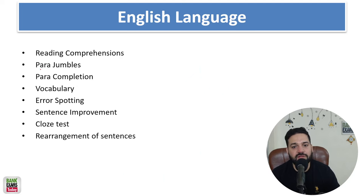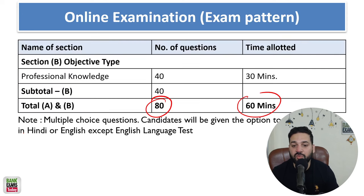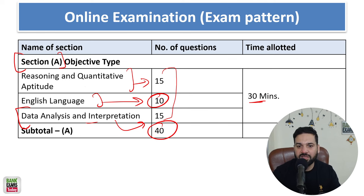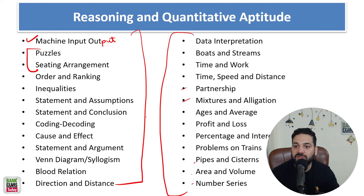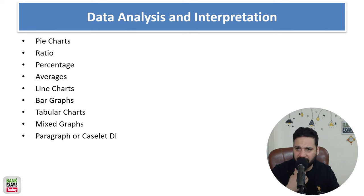In the English Language section, there will be Reading Comprehensions, Para Jumbles, Para Completions, Vocabulary, Error Spotting, Sentence Improvement, Cloze Test, and Sentence Rearrangement — it is very easy to score marks here. For Data Analysis and Data Interpretation, you need to solve Pie Chart and Ratio questions, Double Diagram questions, Tabular Charts, Mixed Graphs, and Data Sufficiency.